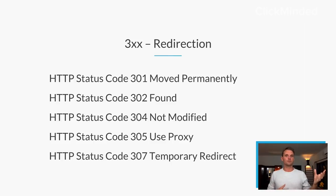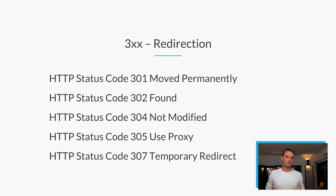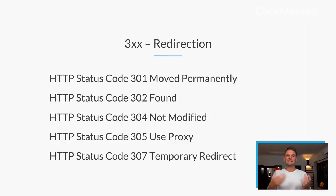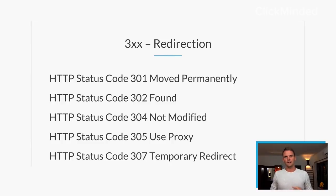The 300 block is for redirects. You requested an address but you were sent somewhere else. There are a bunch of different types of redirects — a 301, a 302, a 304, 305, and 307. Any status code in the 300 block will be a redirection request.